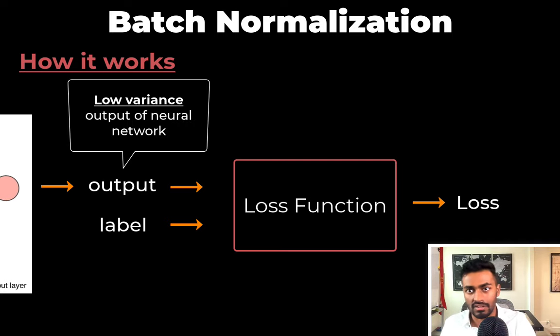Quiz time! Gamma will learn to approximate blank and beta will learn to approximate blank of neuron activations. A: the first blank is true mean and the second blank is true variance. B: the first blank is true variance and the second blank is true mean. Or C: neither of the above. Comment your answer below. That's it for quiz time two and pass two of the explanation — keep paying attention because I will be back to quiz you.